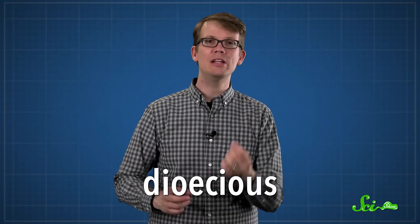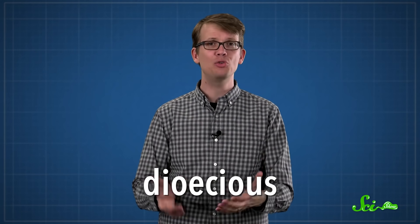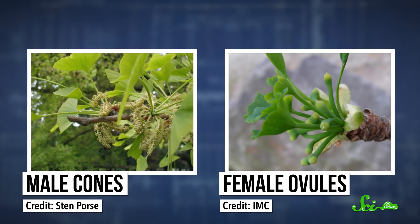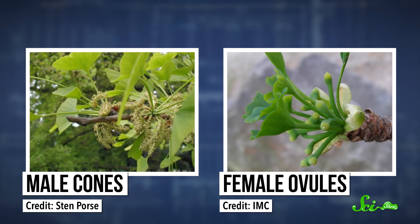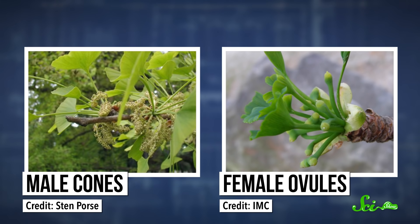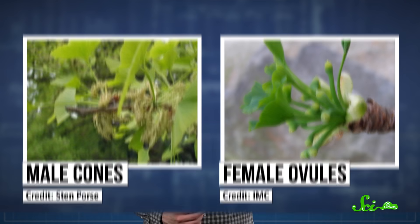Ginkgo trees are dioecious, meaning that there are separate male and female trees to carry out the reproductive cycle. The males produce pollinating cones. The females produce ovules, which become seeds after pollination. Around September or October, the pollinated seeds drop to the ground, where they mature in preparation for spring, and then go dormant for the winter.